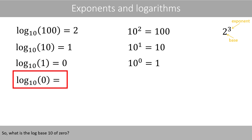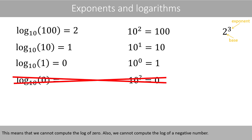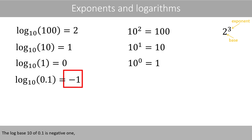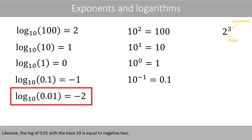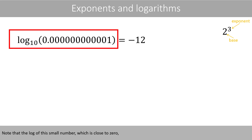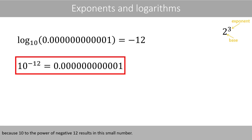What is the log base 10 of 0? In other words, what number should we place in the exponent to get 0? It turns out that there is no such number — 10 to the power of something can never be 0. This means that we cannot compute the log of 0. Also, we cannot compute the log of a negative number. However, we can compute the log of a number that is smaller than 1. The log base 10 of 0.1 is negative 1, because 10 to the power of negative 1 is 0.1. Likewise, the log of 0.01 with the base 10 is equal to negative 2, because 10 to the power of negative 2 is 0.01. Note that the log of a very small number close to 0 results in negative 12, because 10 to the power of negative 12 results in that small number.